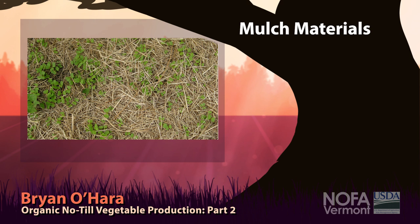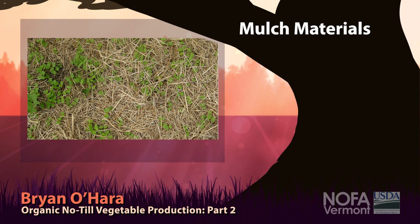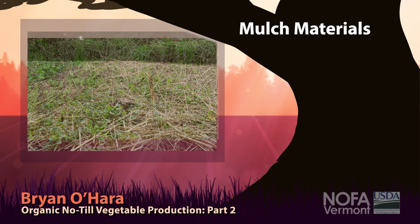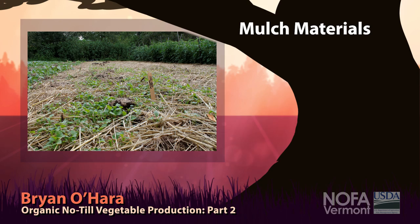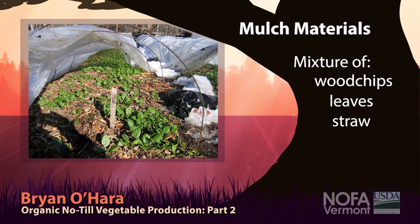Let me talk about mulch materials. That picture shows germination through a mulch — probably a hay-straw mixture from earlier years. We don't use hay anymore. What we actually use now is a mixture of wood chip, leaf, and straw — those are our three main mulch materials. We like to utilize all three at the same time for a diversity of foods for the microbes.